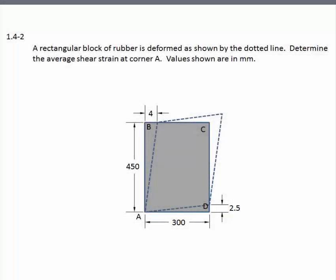Problem 1.4-2. A rectangular block of rubber is deformed as shown by the dotted line. Determine the average shear strain at corner A. Values shown are in millimeters.